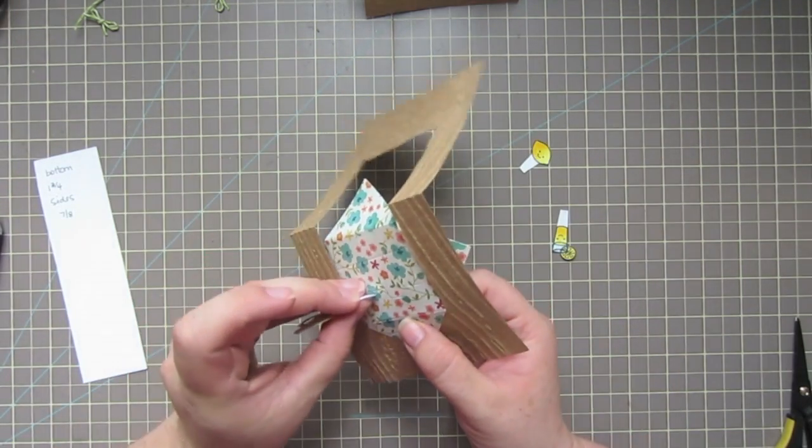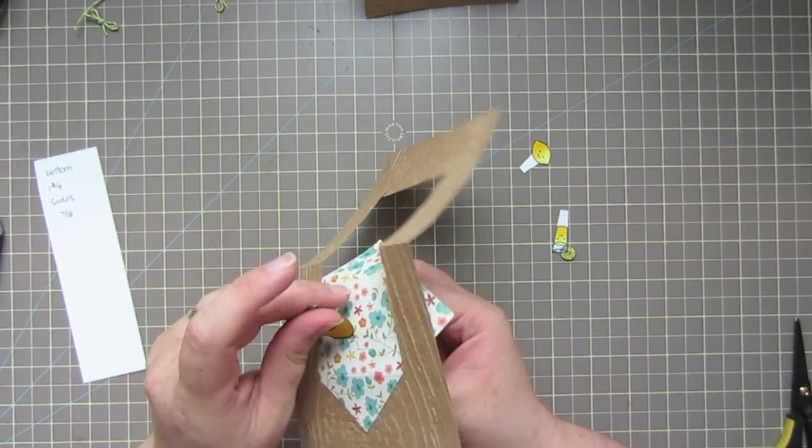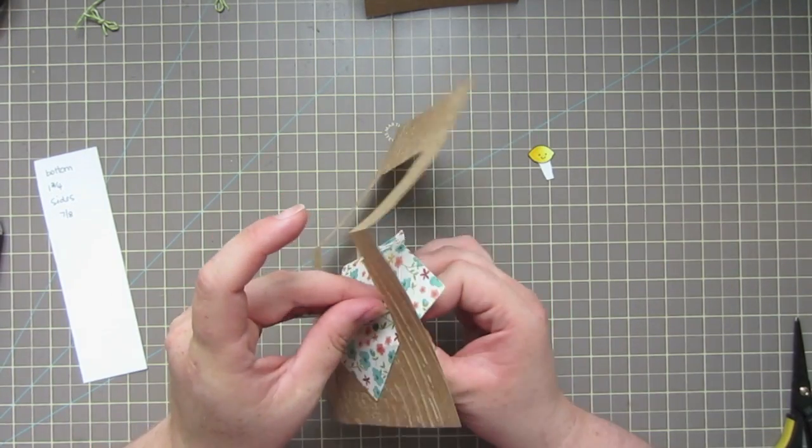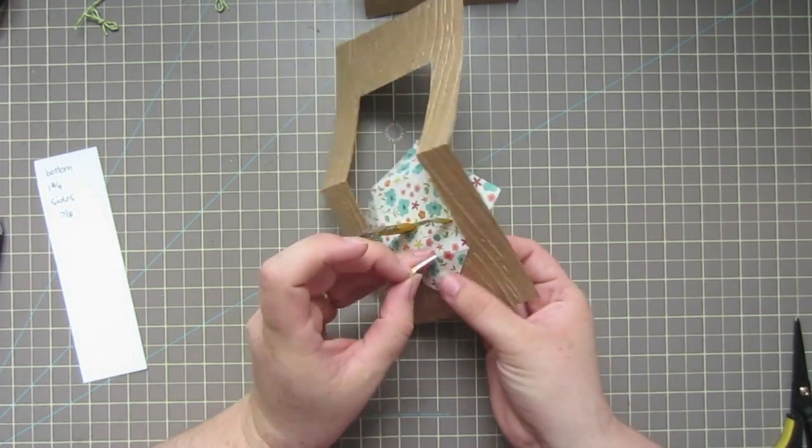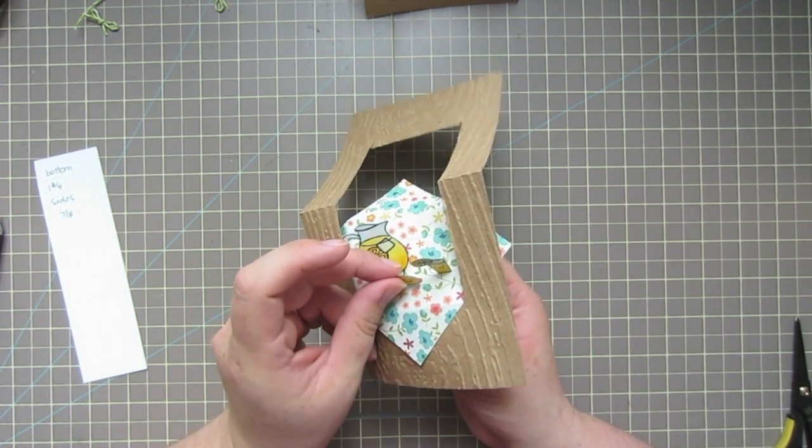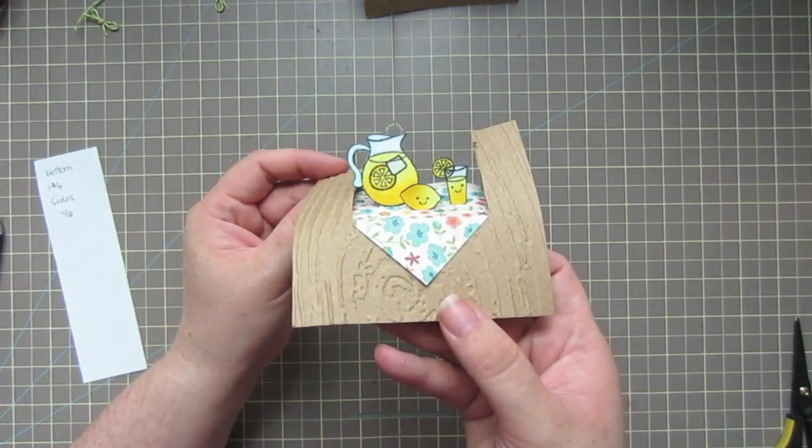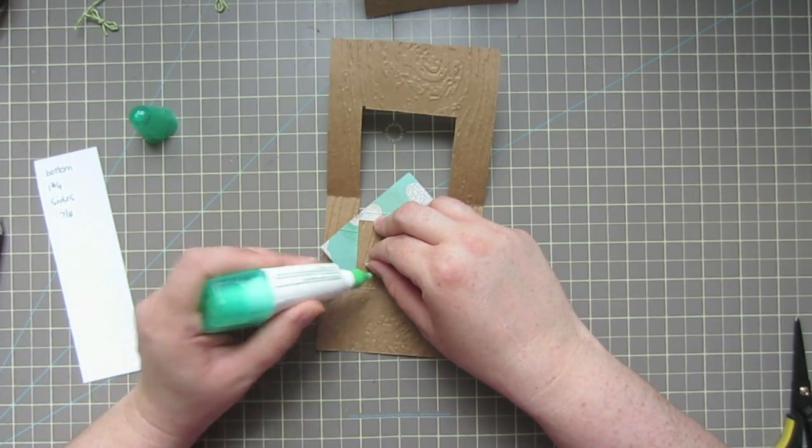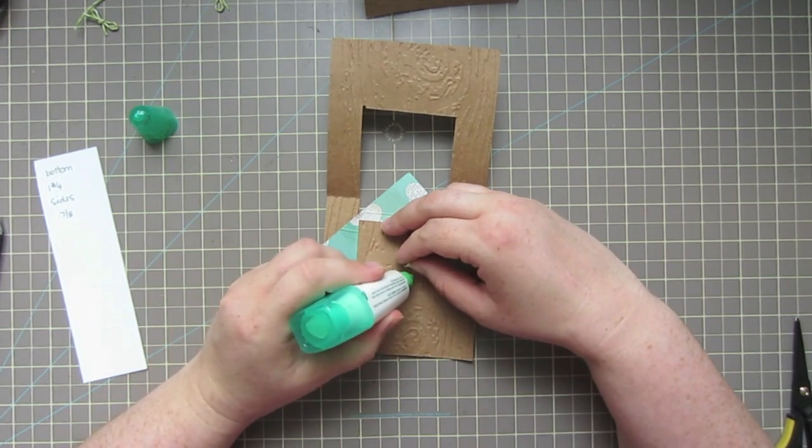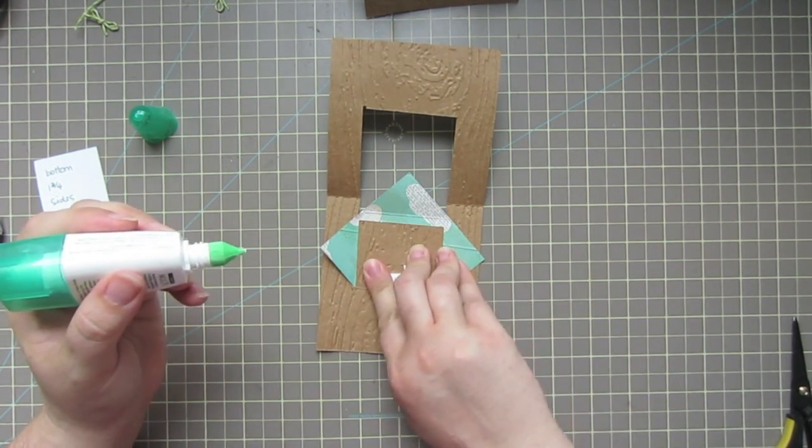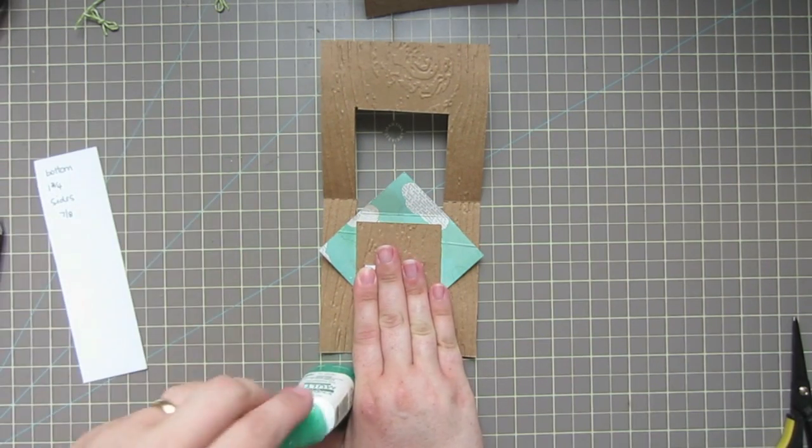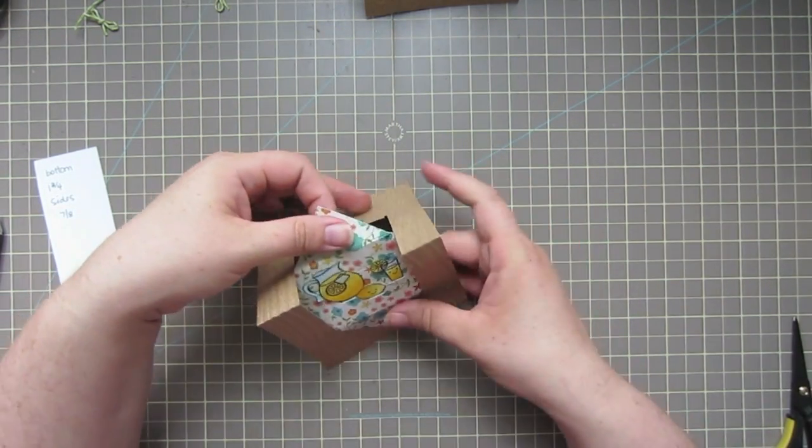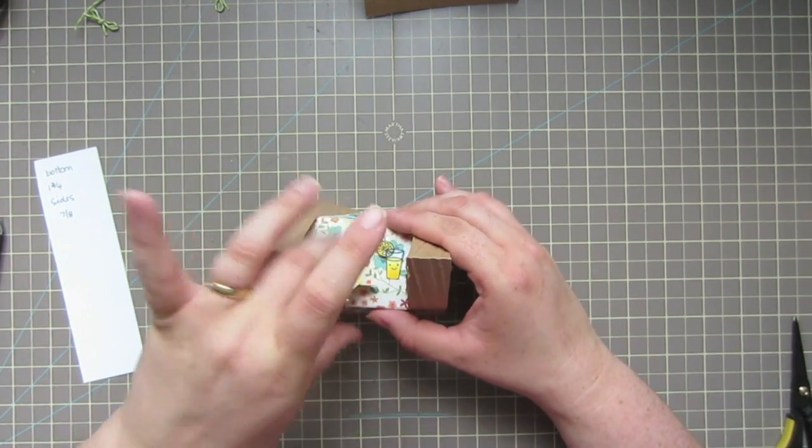And then we're just going to go ahead and fit those through, pull them under. Very quick and simple. That's how that's looking. We're going to flip it over and glue these down to the bottom. I'm just going to take a little bit of Tombow Mono just so that they don't come up. Then we'll fold this back into place and we're just going to fold these back up.